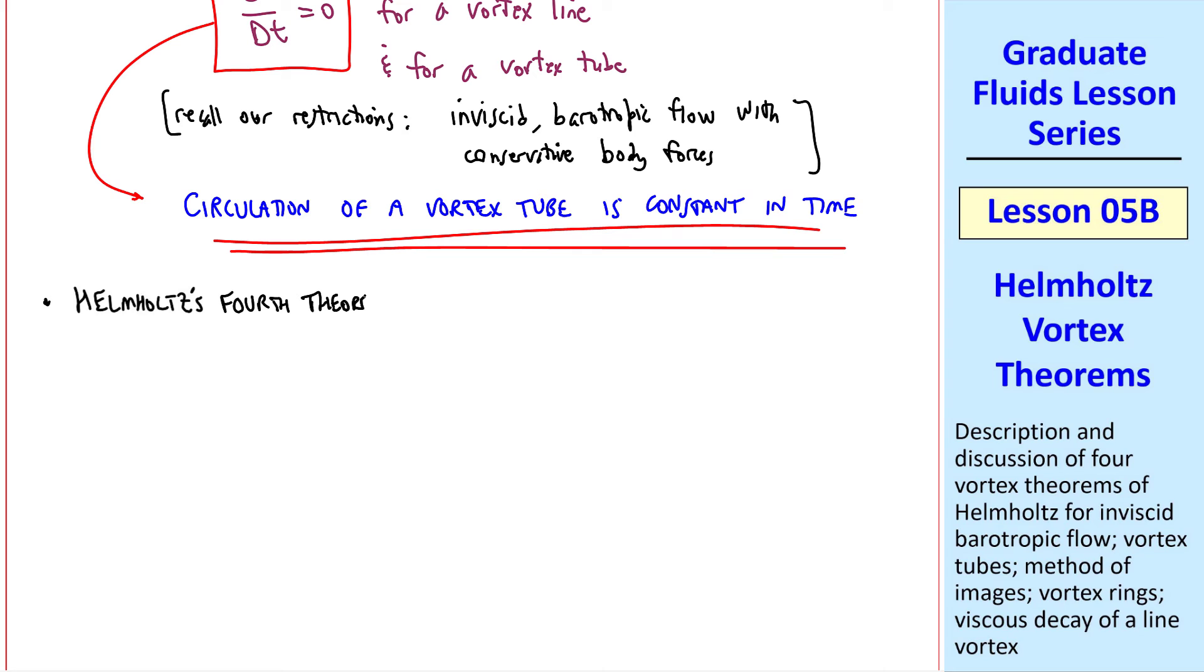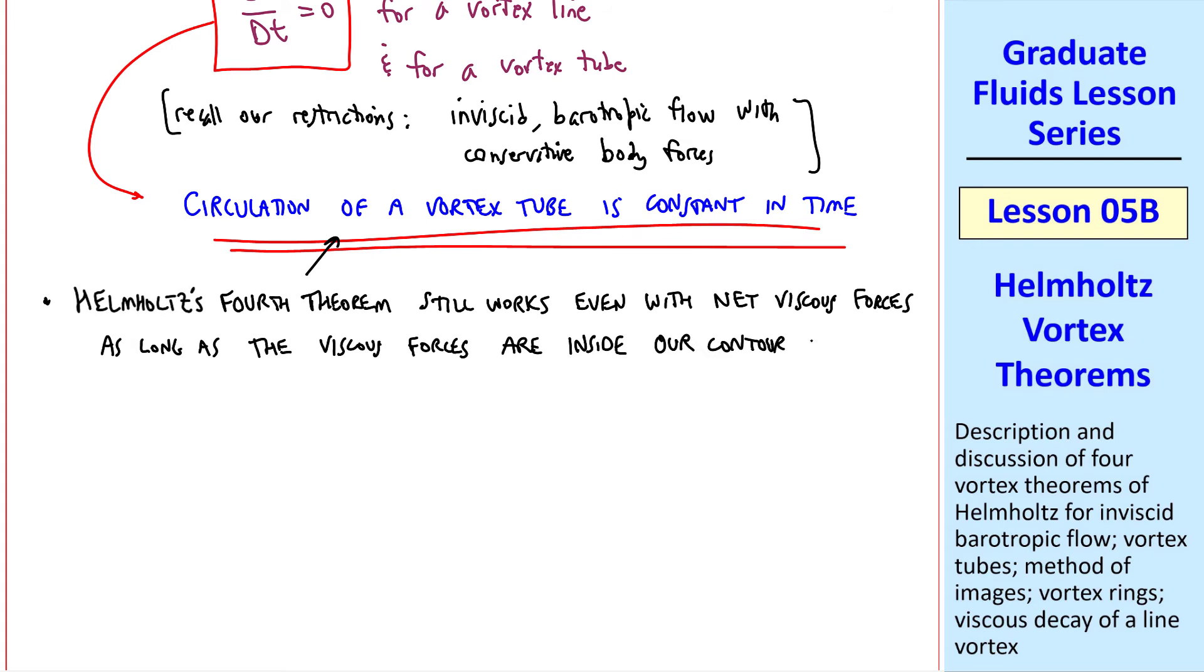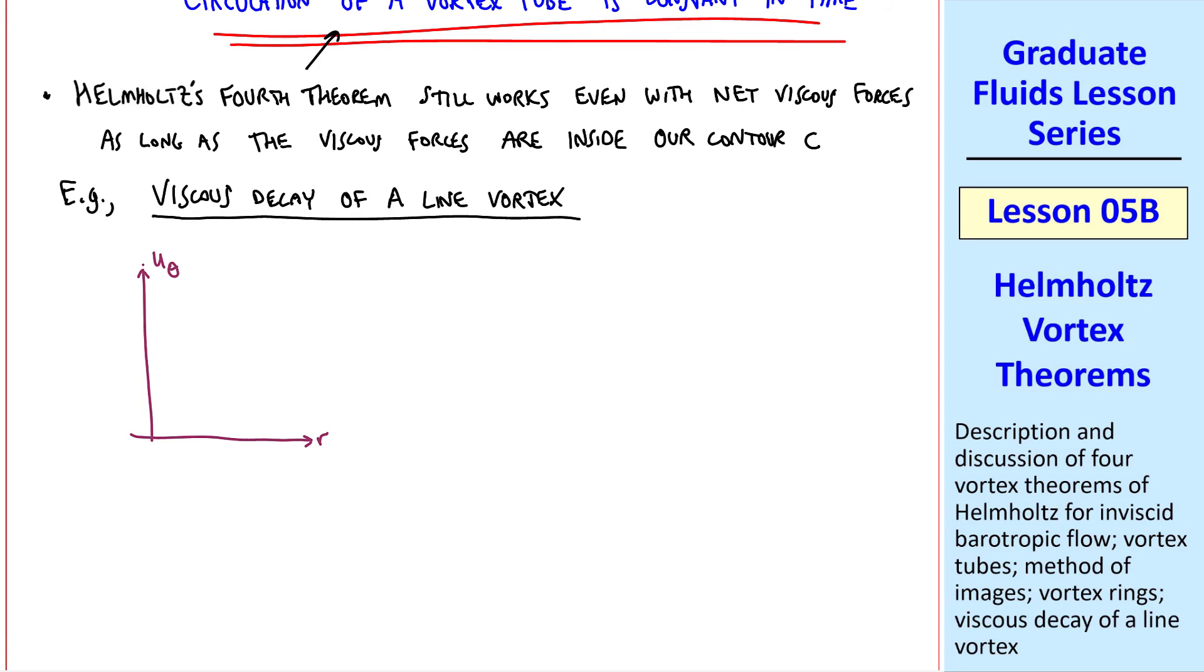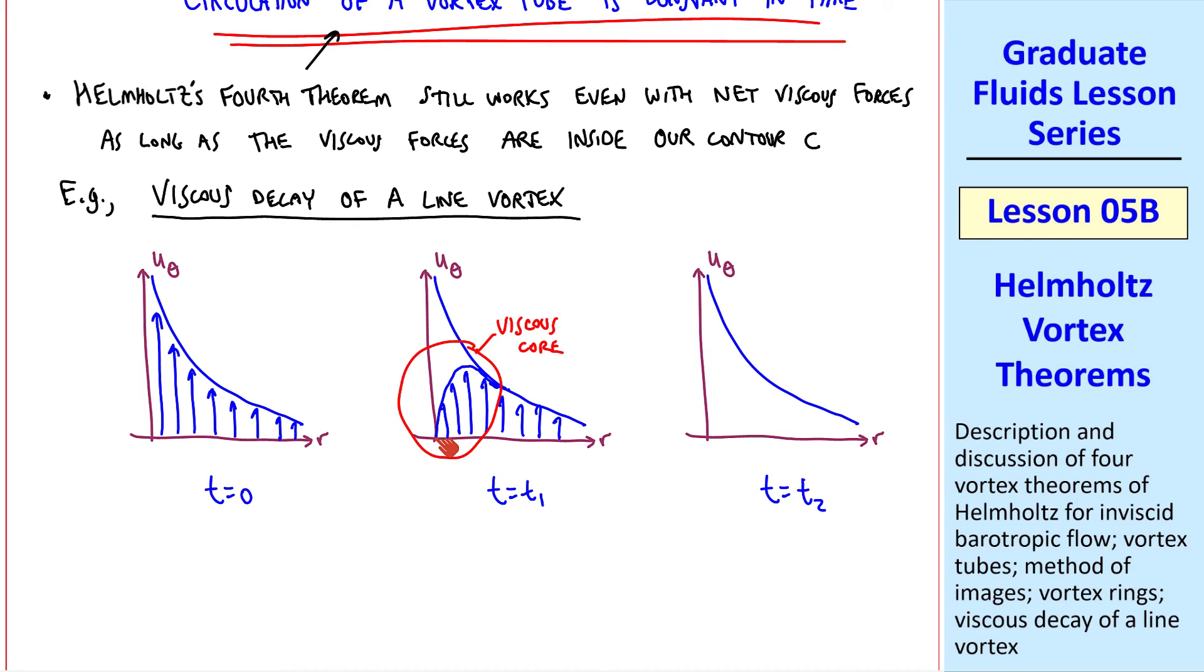Finally, I want to show that Helmholtz's fourth theorem still works even with net viscous forces, as long as the viscous forces are inside our contour C, the contour that we use to calculate circulation. For example, consider the viscous decay of a line vortex. Let's sketch circumferential velocity component u theta for a line vortex, which decays like 1 over r. I'll draw three times: t equals zero, t equals t1, and t equals t2. At t equals zero, there's a singularity with infinite speed at the origin, and velocity decays like 1 over r. If this were an inviscid flow, it would remain this way for all time. But if we allow viscous effects, we'll get a viscous core that blends into the outer flow.